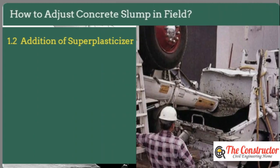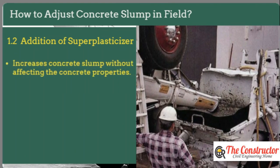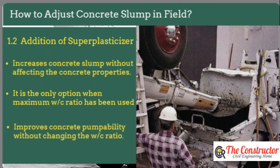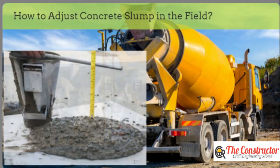The addition of a superplasticizer is another method to increase concrete slump. Superplasticizer increases concrete slump without affecting the concrete properties. That is why it becomes the only option when the maximum permissible water-cement ratio has been used in the concrete mix. The addition of superplasticizer improves concrete pumpability without changing the water-cement ratio.